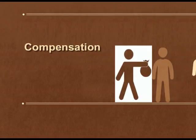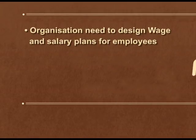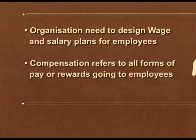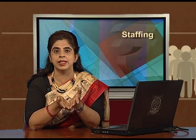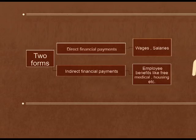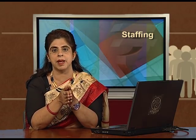The last step, step eight, is compensation. Organizations need to design the wage and salary plan for employees. Compensation refers to all forms of pay or rewards going to employees. It may be in the form of direct financial incentives such as wages, salaries, incentives, commission, and bonuses, as well as indirect payments like paid insurance, paid vacations, and medical insurance.